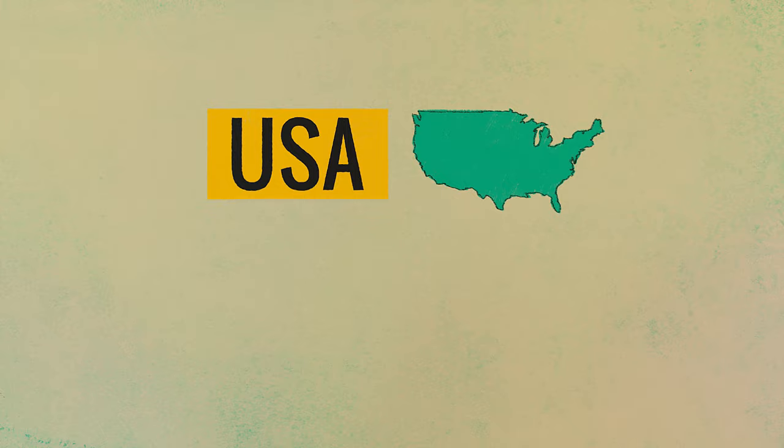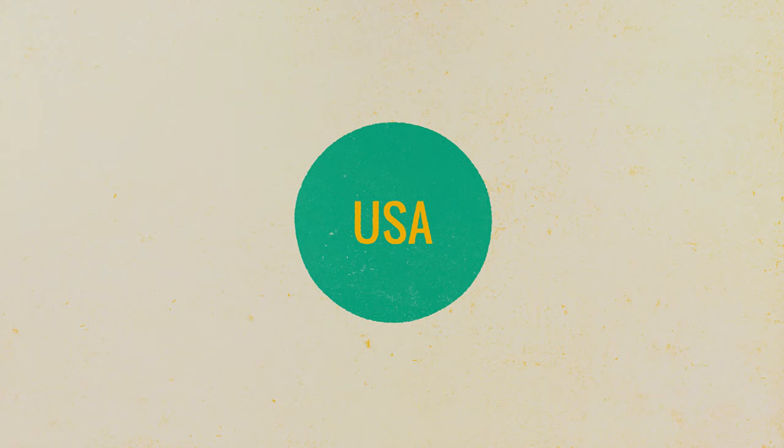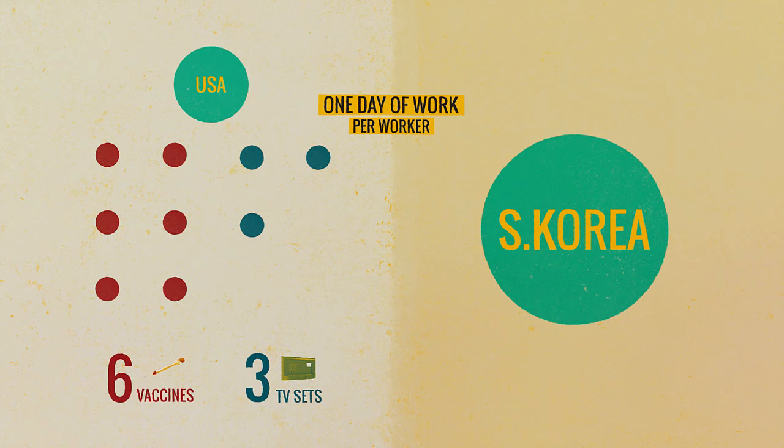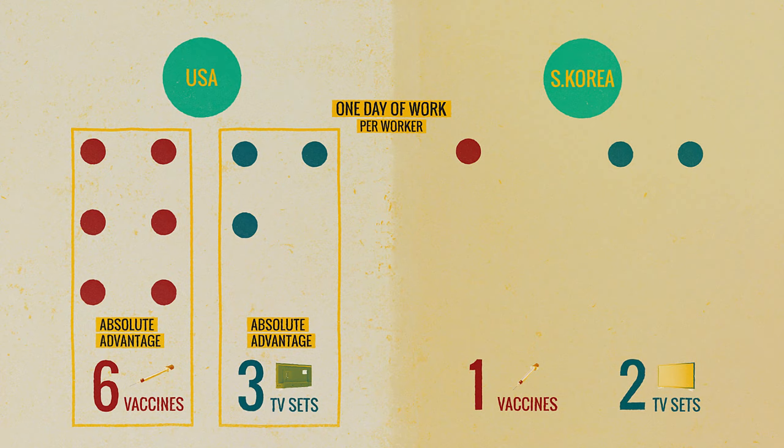Examples will help a lot. We'll consider the United States and Korea and two goods: pharmaceutical production — like a vaccine — and electronics production — like TV sets. In the United States, one day of work produces six units of vaccine and three TV sets. In Korea, one day of work produces one unit of vaccine and two TV sets. So you can see right away that the U.S. has an absolute advantage in producing vaccines and also an absolute advantage in producing TV sets.